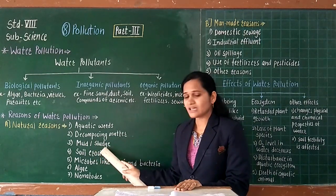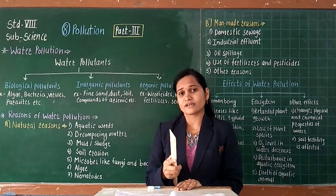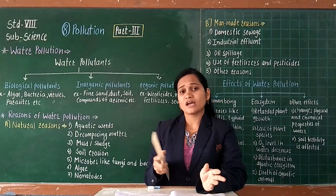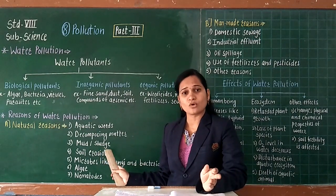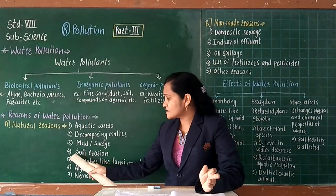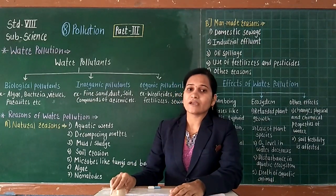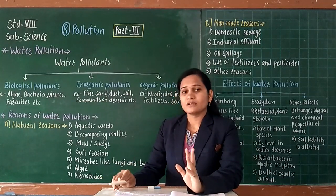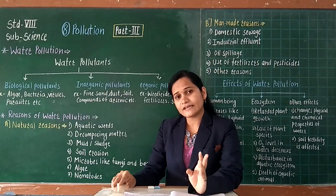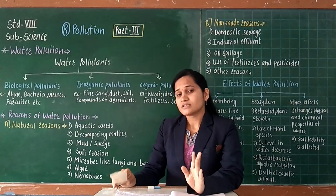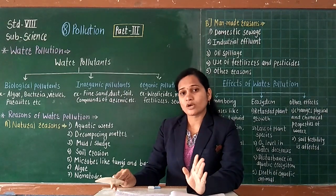The third natural reason is mud and sludge. During the rainy season, mud and sludge mix in rainwater and get added into water bodies like rivers, causing pollution. The fourth reason is soil erosion — meaning the wearing away of the top layer of soil. During soil erosion, biotic components (related to living things) and abiotic components (related to non-living things) from the ecosystem mix into the water, which is also a reason for water pollution.